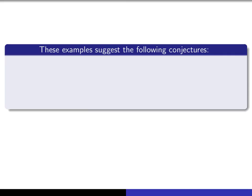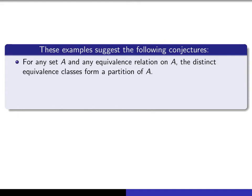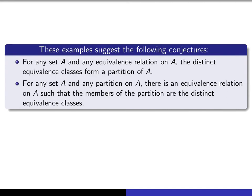These examples suggest a conjecture about the connection between partitions of a set and equivalence classes of an equivalence relation. Namely, given any set A and any equivalence relation on A, the distinct equivalence classes always form a partition of A. Conversely, given any partition of a set A, there's always an equivalence relation for which the distinct equivalence classes are precisely the members of the partition. It turns out this is not an accident — there is a theorem that guarantees both of these things are true, and we'll discuss it in the next lecture.